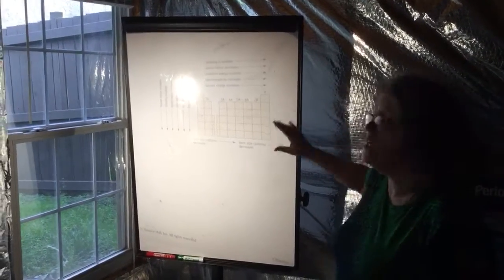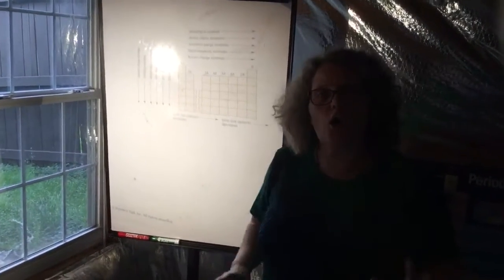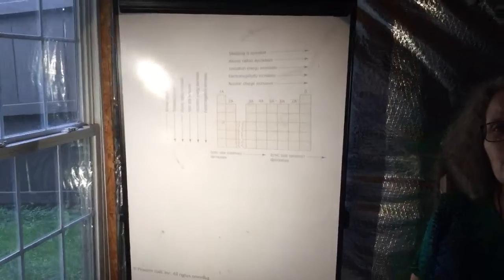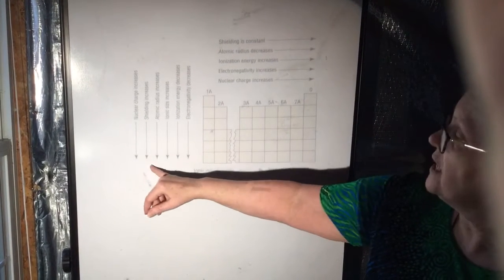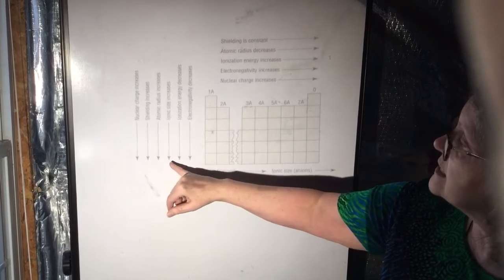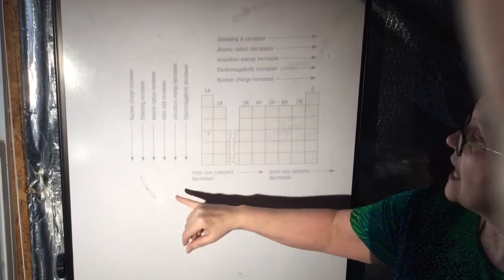I have up here an overview explaining what the periodic trends are. We said three that are really important are atomic radius, also the ionic radius or ionic size, as well as electronegativity. So here we have the atomic radius, the ionic size, and the electronegativity.